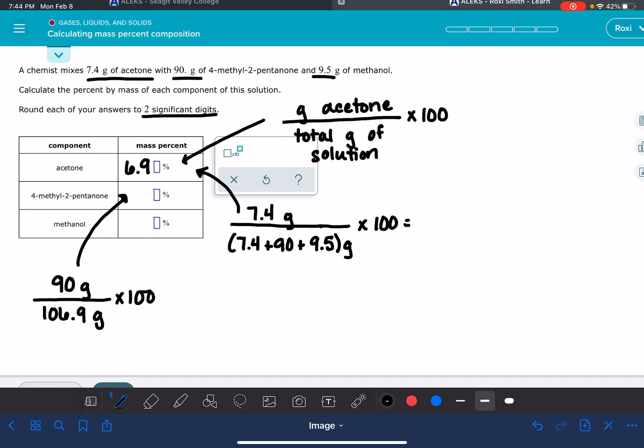Multiply it by 100: 90 divided by 106.9 is 84 to two significant figures.